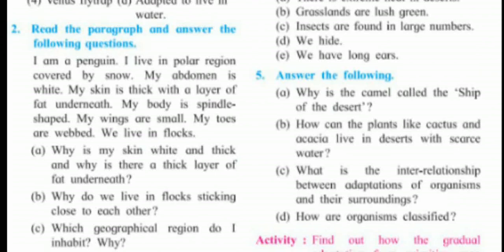Question one asked: why is the skin white and thick and why is there a thick layer of fat underneath? Because they live in a polar region always covered with ice or snow. To protect the body from extreme cold, they have thick skin which generates heat. Also, their white color blends with the surrounding ice color, protecting them against predators. Write these points in a point-wise way — one, two, three.